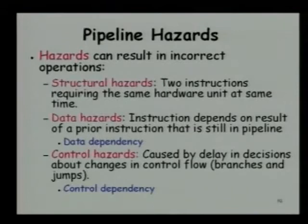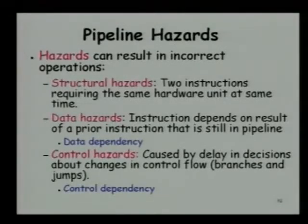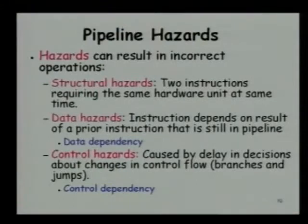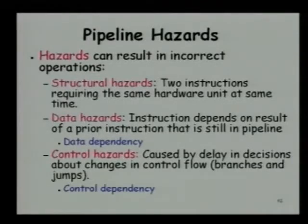There are three categories of hazards. This is a very common interview question and a comprehensive viva question — what is a pipeline hazard, what are the different classes of hazards, give examples of each, and how do you resolve these hazards in modern processors. A hazard can result in incorrect operations of the pipeline, and there are three categories. One is the structural hazard. Structural hazards occur if two instructions that are concurrently under execution require the same hardware unit — for example, they might require the cache or a certain register.